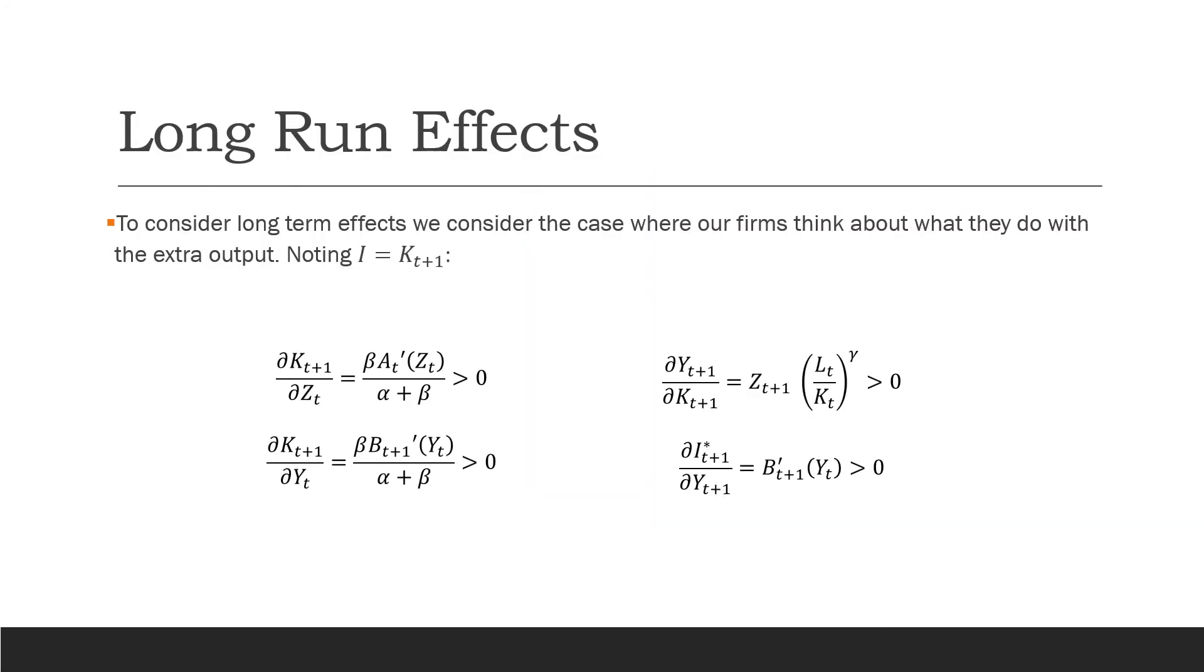So for our long run effects, we're going to start thinking about what our firms do with the extra capital. The way we carry this through is: what happens to capital in next period as a result of the shock? That's going to increase. What's going to happen to capital in the next period as a result of the extra output in period t? That's going to increase as well. What about production in the next period? Overall, it's going to go up.